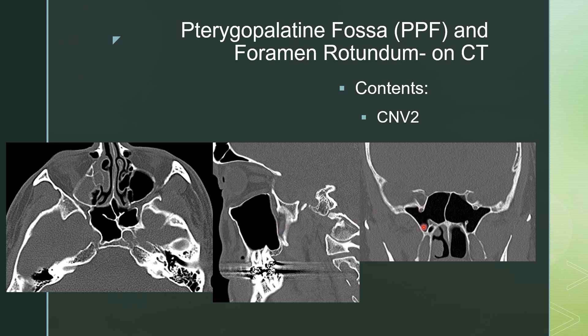If you look on the coronal view at the level of the pterygoid plates, here's the vidian nerve canal. Superior to that and slightly lateral is foramen rotundum on the coronal view, on the right and on the left.